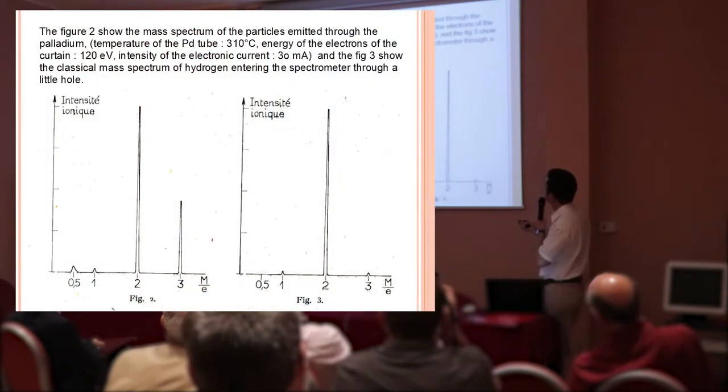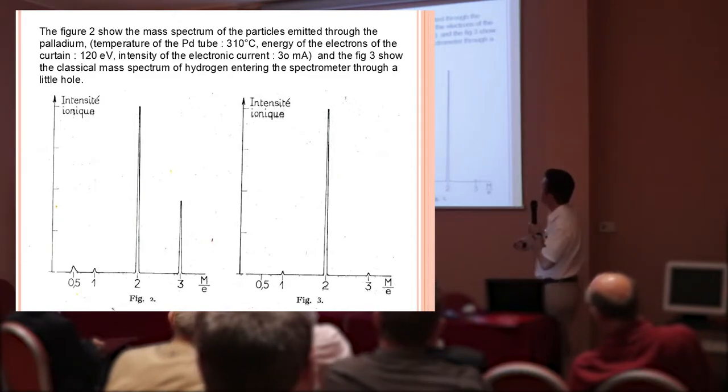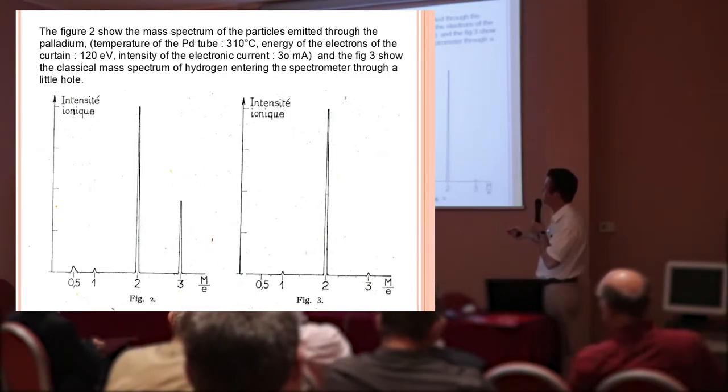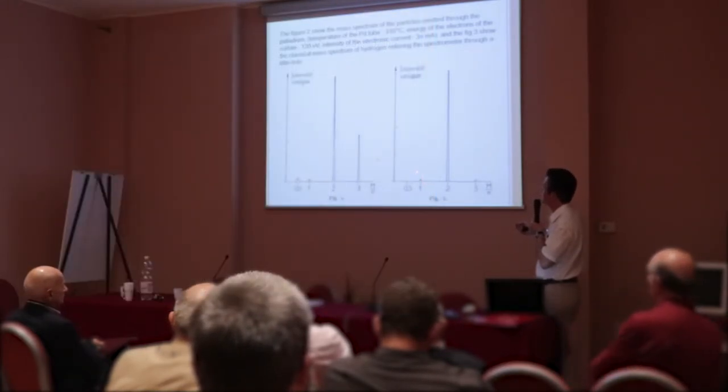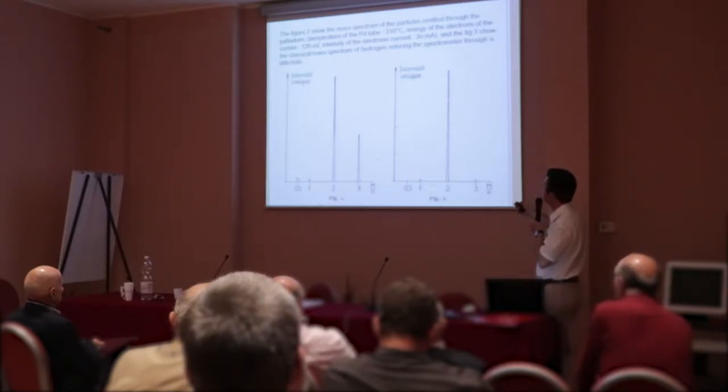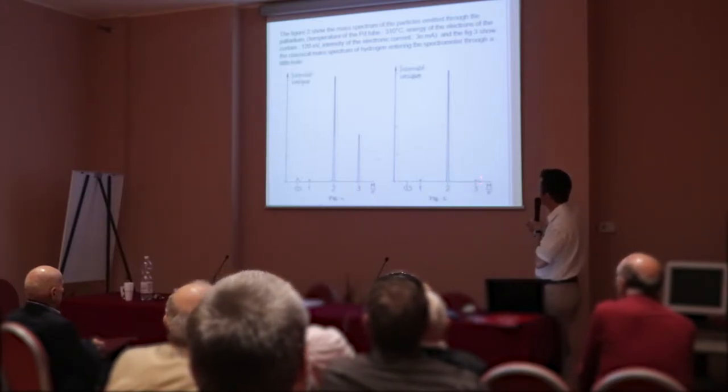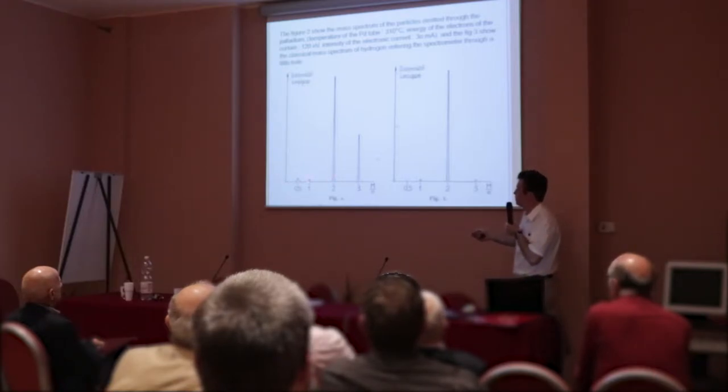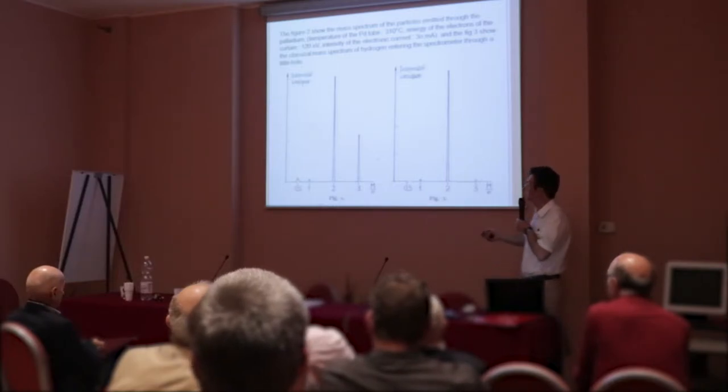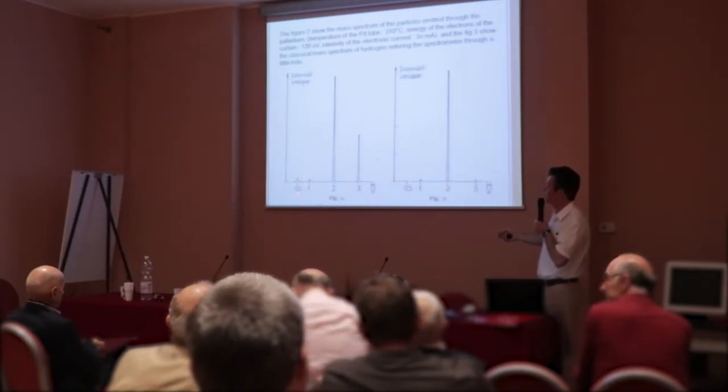That's the result. Here is the classical mass spectrometer of hydrogen. And here, it is the mass spectrum of the hydrogen diffused by the palladium. This peak is easy to explain. It's simply a proton made by ionization of atomic hydrogen. Here is a molecular ion H2+. Here is the molecular ion H3+. We have the same three ions with the diffusion through the palladium, but we have a very strange peak here. It's a mass peak. It's an atomic mass 0.5. It's very difficult to explain.